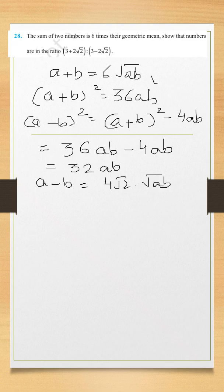Now we have one equation A plus B and one equation A minus B. If we add these two equations, we will get 2A equal to 6 plus 4 root 2 common root AB.